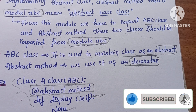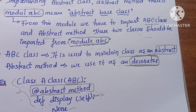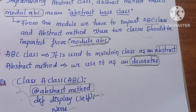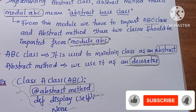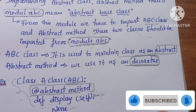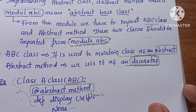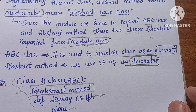So, this is the example of abstract class and abstract method — the concrete class implements the method defined in the abstract class.